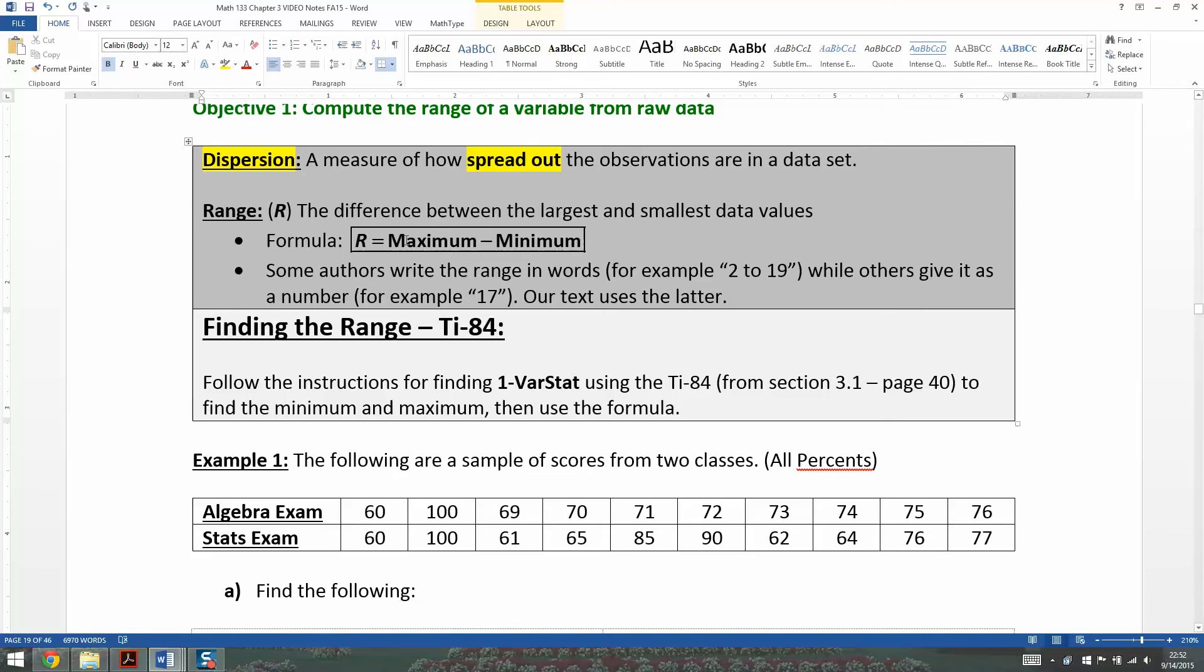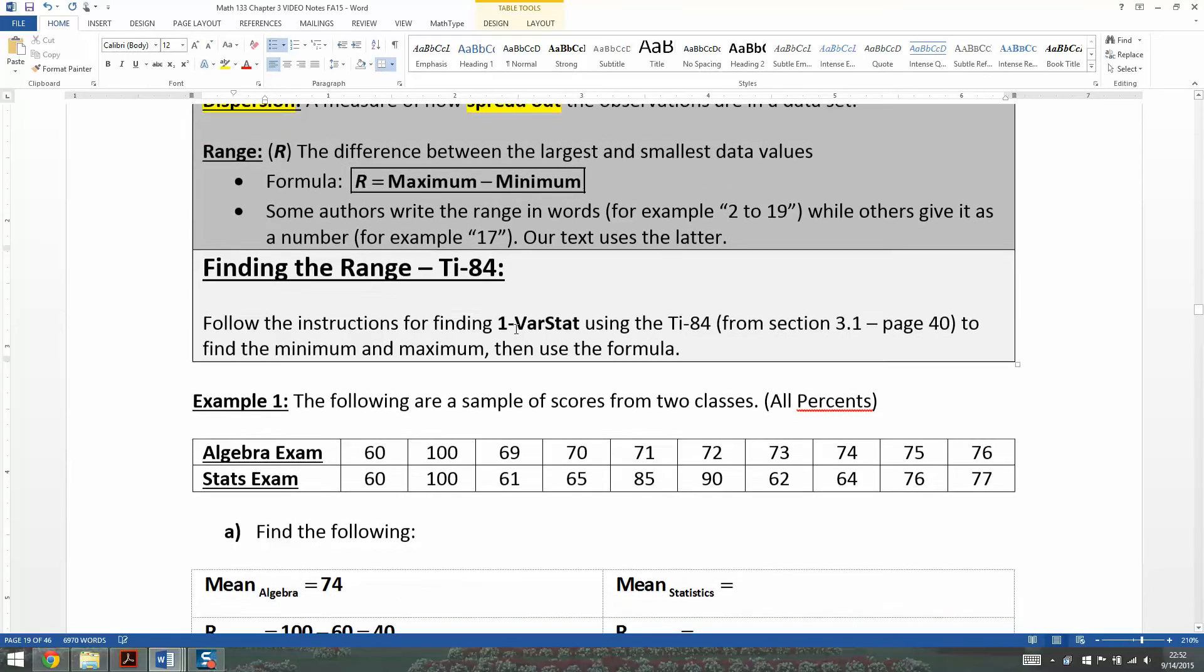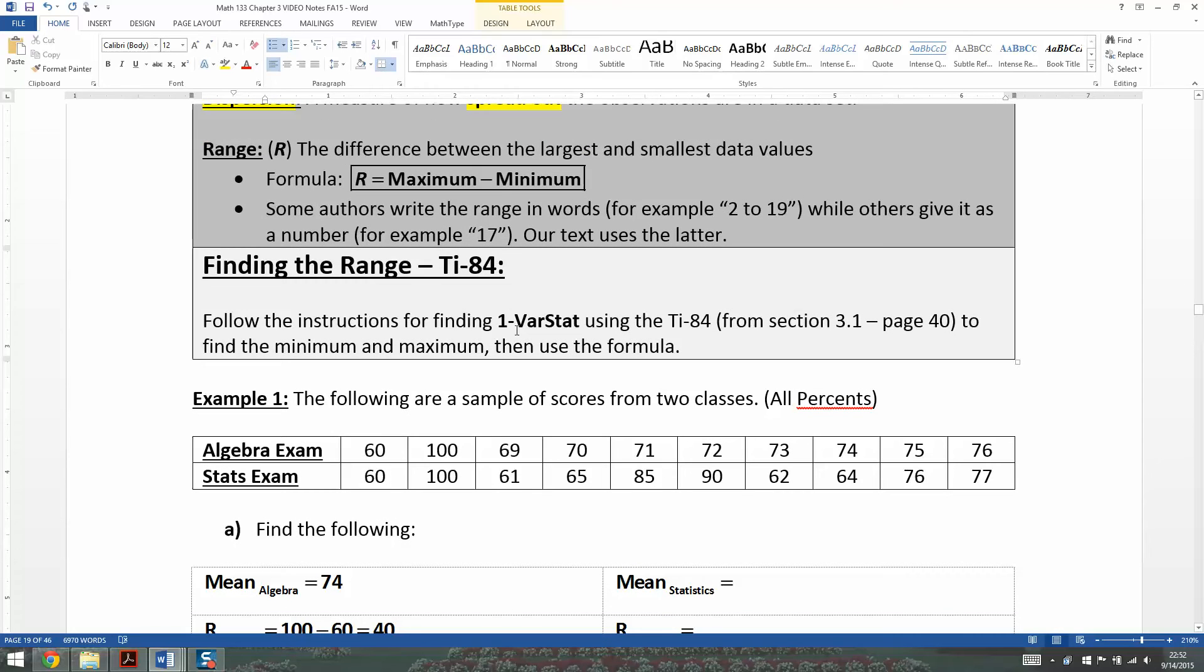You subtract them and you'll have your range. The calculator doesn't really find the range per se, but it does find the maximum and minimum. So you can find the max and min with your calculator and then just use the formula.